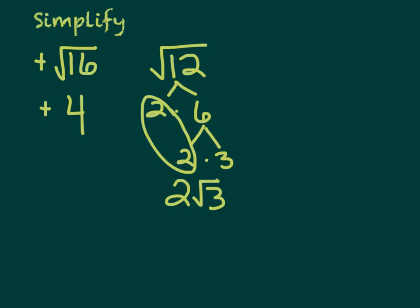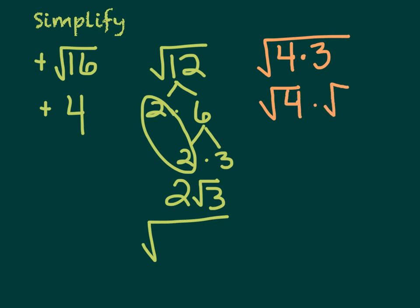A way I think is easier: take your square root of 12 and rewrite it as the square root of two numbers multiplied together. Think — are there any perfect squares that fit into 12? Our perfect squares are 1, 4, 9, 16, 25, 36, 49. Does 4 go into 12? Yes. So 12 is 4 times 3. That's the square root of 4 times the square root of 3, and the square root of 4 is 2. So that's 2 root 3. A bit faster.